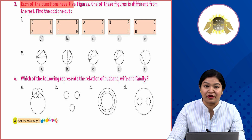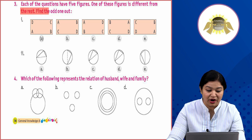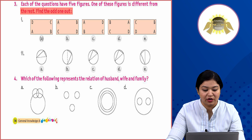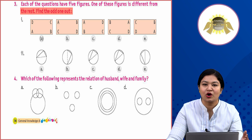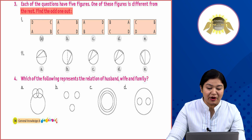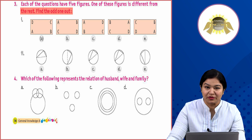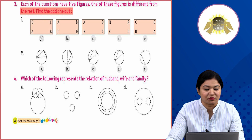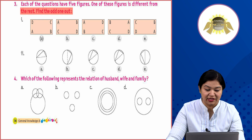Each of the questions has 5 figures; one of these figures is different from the rest — find the odd one out. Here children, 5 figures are given and from those 5, one figure is different, so we need to find and circle it. In the first part, 5 boxes are given with ABCD inside. If you look carefully, the first part is the odd one, so we circle it. In the second, 5 circles are given with small triangles inside them.